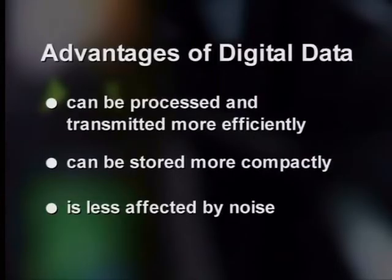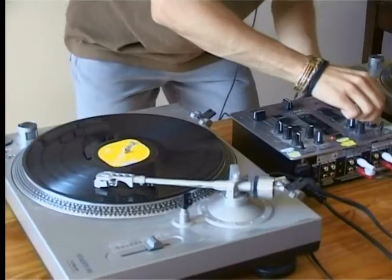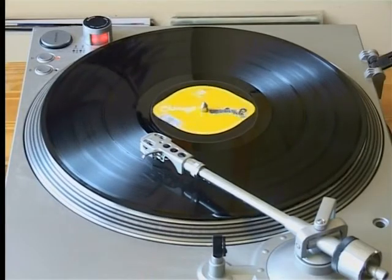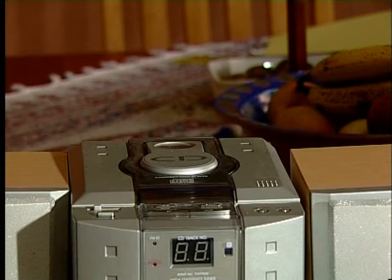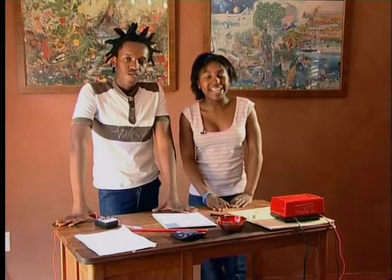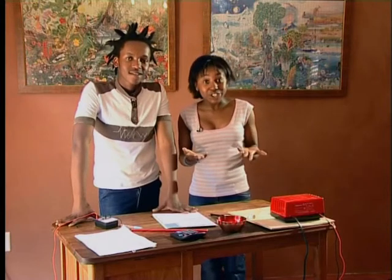This goes to show how much more compactly digital data can be stored than analog data. The last advantage of digital data over analog is that digital data is less affected by noise. Do you hear the scratching in the background when we play the LP? That's noise. Now listen to the CD — the quality is better because the CD has digital data stored as close as possible to the original recording, and it will remain the same no matter how many times you play it. Analog data produces sounds with scratching noises which will become worse over time.